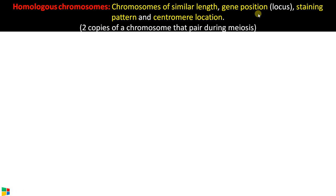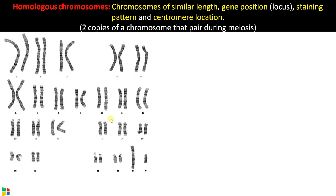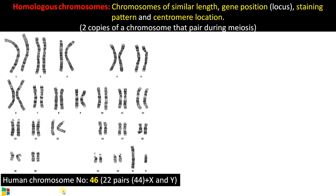Homologous chromosomes are the chromosomes that pair during meiosis. Let's begin with a karyotype. This is a human karyotype — as it is XY, this is a male human karyotype. As you can see, there are 46 chromosomes: 22 pairs plus X and Y.